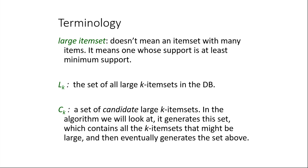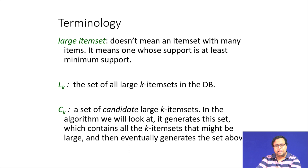LK is the set of all large K item sets in the database, and CK is the set of candidate large K item sets. In the algorithm, it generates this set which contains all K item sets which might be large. CK is a candidate item set that belongs to LK. LK is the superset of all large K item sets in the database — 'large' meaning item sets with support above the cutoff. These are the terminologies we will use to define the algorithm.